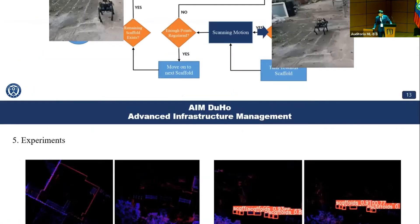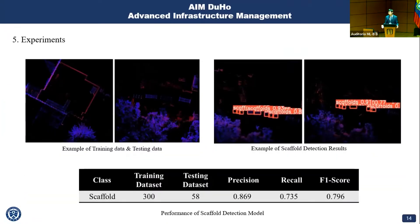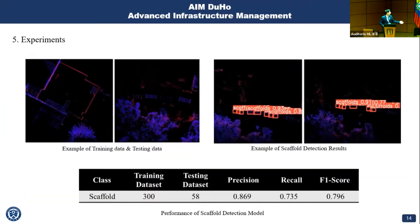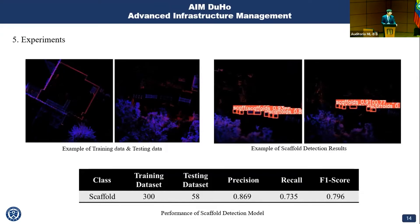Now I'll talk about experiments. This is the performance for the scaffold detection model. We have a very small training dataset of 300 images, but since most scaffolds look alike from the top, we achieved acceptable performance for field use. This could be improved by gathering more data, which I've already done, and I'm going to retrain the model when I return to Korea.